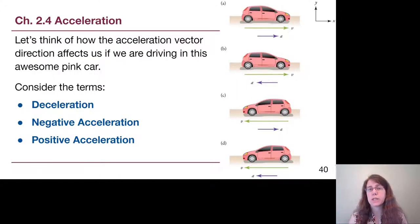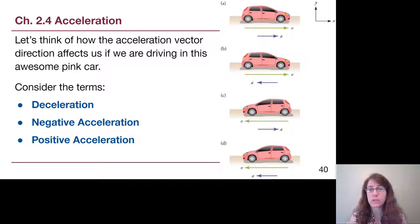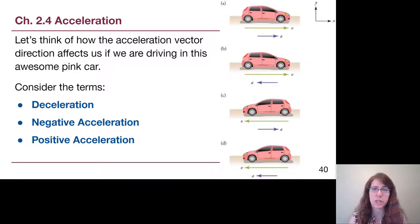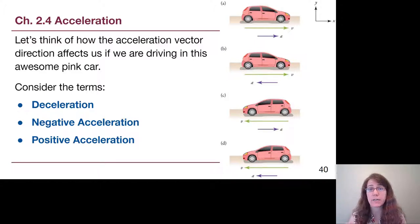One of the biggest things students struggle with is the difference between deceleration and negative acceleration. Pay close attention because it's one of the most common mistakes. The three terms — acceleration, deceleration, and negative/positive acceleration — are all separate ideas that fall under the umbrella term of acceleration. Acceleration is simply a change in velocity over time. Deceleration means we are slowing down. Negative acceleration only means the arrow points in the negative direction, and positive acceleration only means the arrow points in the positive direction.